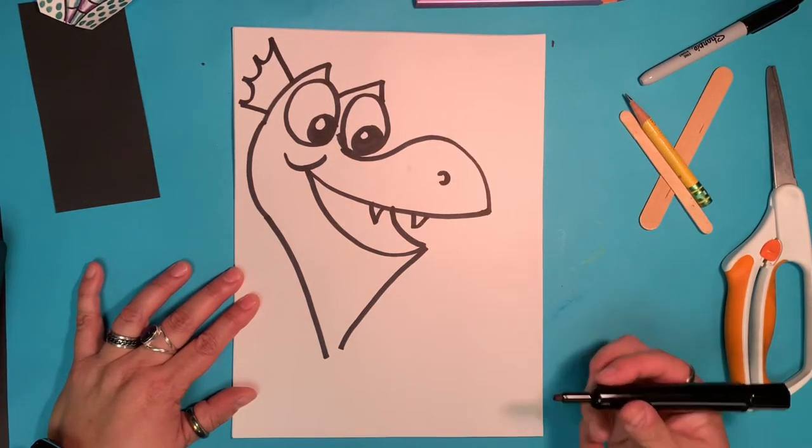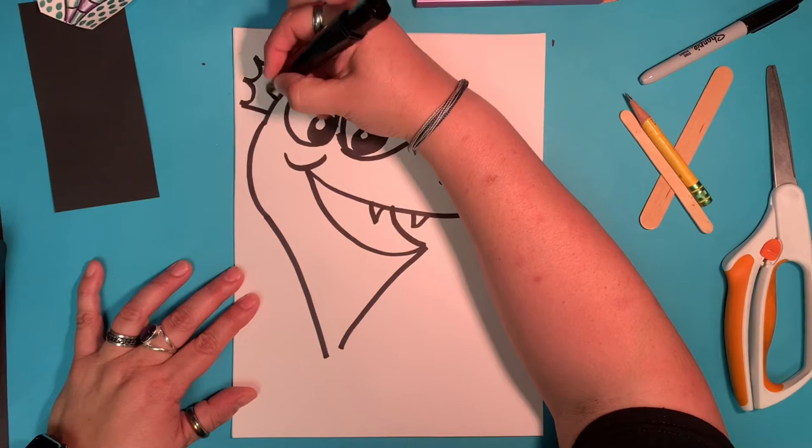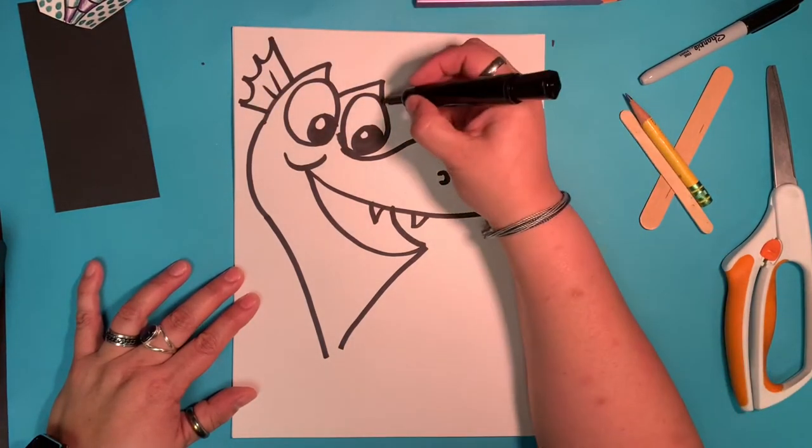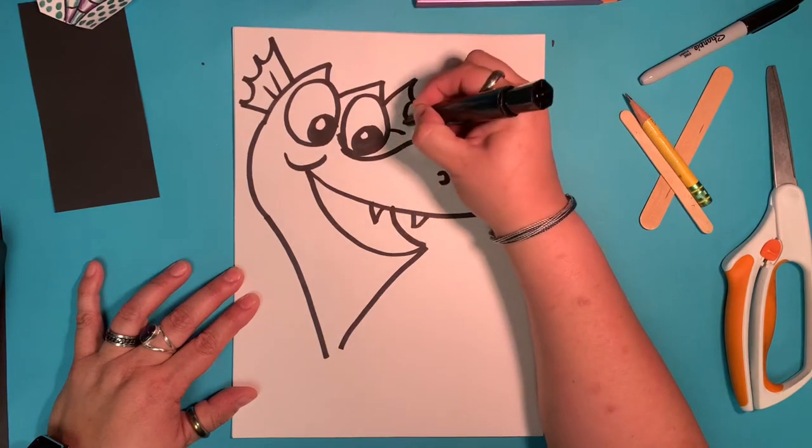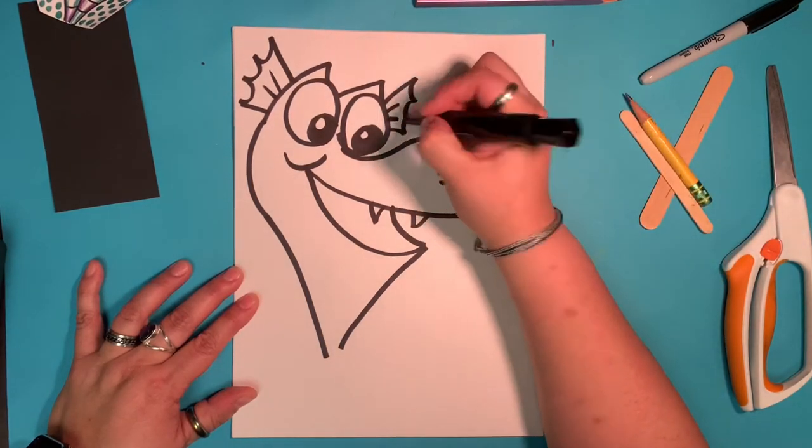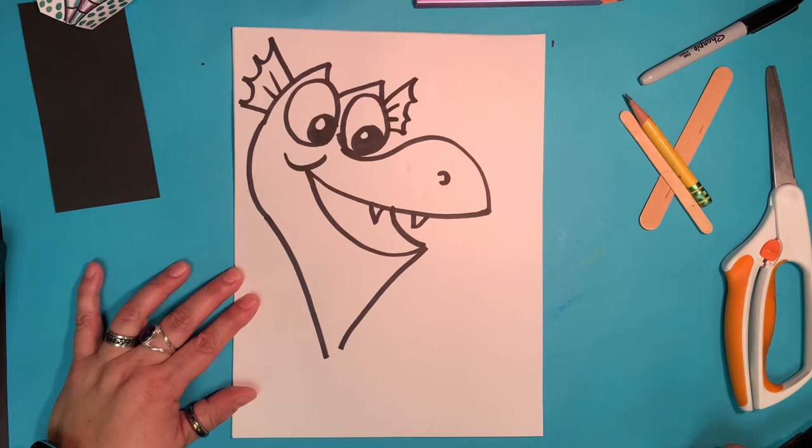And there are his little wings. We can add some accent lines inside. And we're going to do the same going the opposite direction. Diagonal, diagonal, bounce, bounce, bounce. And then some decoration lines. So there is Crispin's head.